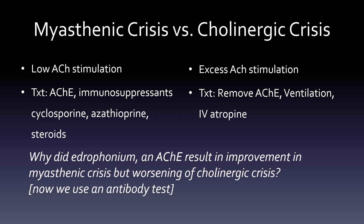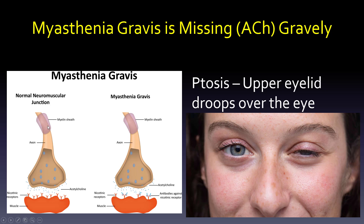Here's a visual of myasthenia. On the left is the normal neuromuscular junction. On the right, we have myasthenia with the antibodies against the receptor. Those antibodies are not letting acetylcholine get through. So the idea is we need more acetylcholine, but we don't do it directly — just like with the blood-brain barrier, we can't give dopamine directly; we have ways around it.